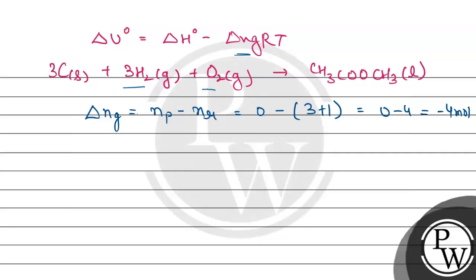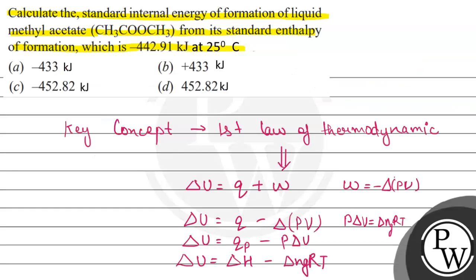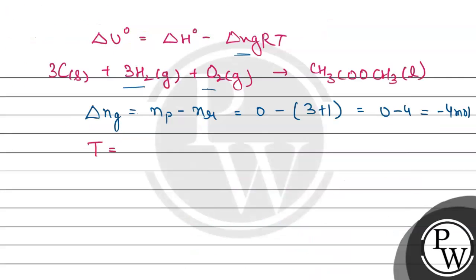Now we will see the temperature. Temperature should be in Kelvin. The temperature given is 25°C. To convert to Kelvin scale, add 273. So we get 298 Kelvin.